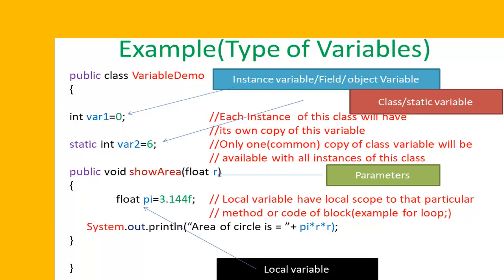So this kind of variables have some local scope to some particular method or some particular loop or some block of code. We can also consider the parameters of a method as variables in Java. For example, in our class VariableDemo we can see the radius r, which is declared as float in method showArea, is a parameter.